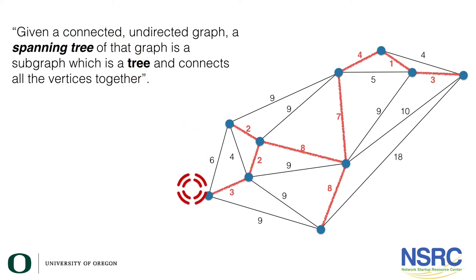A tree means there are no loops. If you pick any two points on this spanning tree, there is only one way to travel between those two points. So the spanning tree of that graph is a subgraph which is a tree and it must connect all the vertices or nodes together. That defines spanning tree in terms of the mathematics.